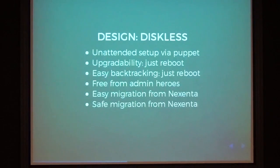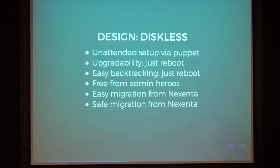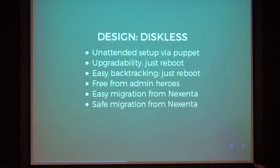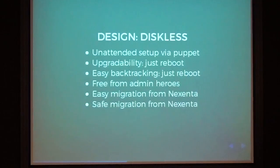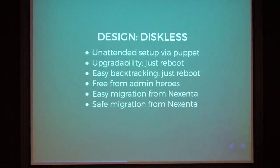We want it to be free from admin errors. Admin errors happen when someone goes to the box and says 'I just fixed something there.' Because we are diskless, each reboot wipes out any such ad-hoc changes. So anyone needing to make a change has to go through modifying Puppet, through code review, making sure that at reboot everything will be there. We can track exactly what happened, instead of having hackish fixes done everywhere — which of course never happens.